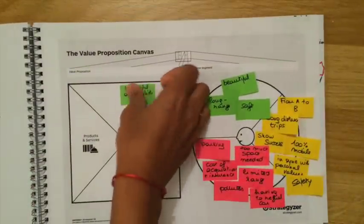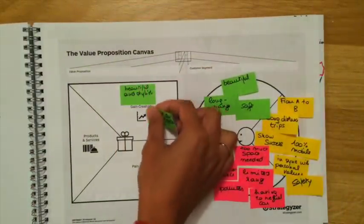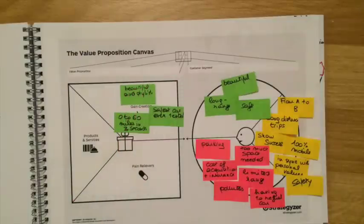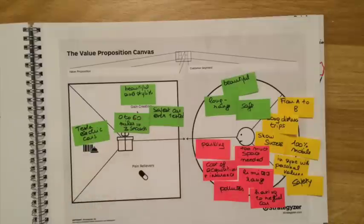Here is its value proposition. Tesla cars are beautiful and stylish cars. They're rated the safest cars ever tested, and they can go from 0 to 60 miles per hour in 3 seconds. Just like Better Place, Tesla wants to address the pain of not being able to do long distance trips.